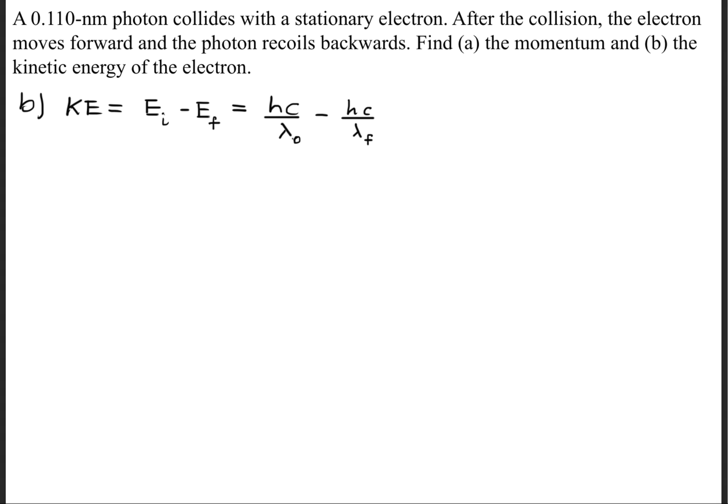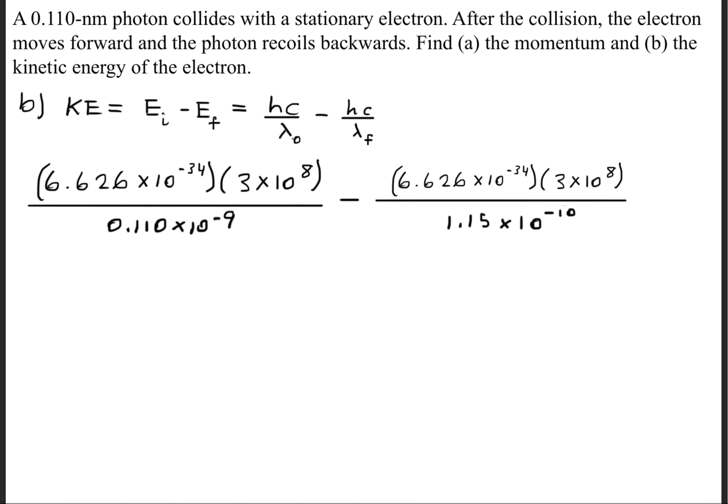Now, in order to solve part B, it's asking for the kinetic energy of the electron. Well, here we can state that the kinetic energy is equal to the initial energy minus the final energy. And we know that the energy, we can write that as Planck's constant times the speed of light divided by the wavelength. So we now have the values that we can plug in for these variables. And once we do that, we'll get 7.6295 times 10 to the negative 17th joules.